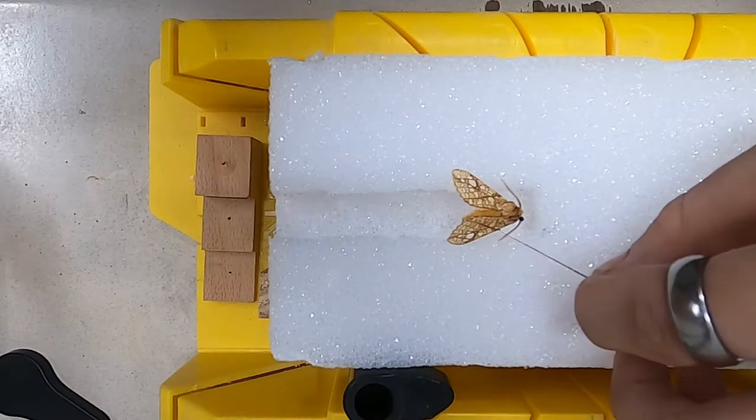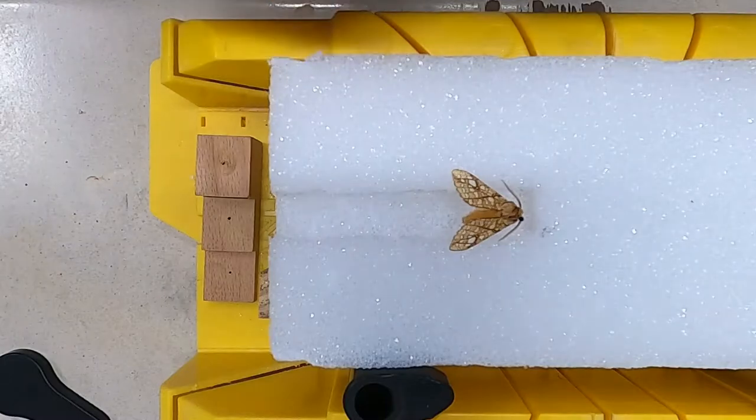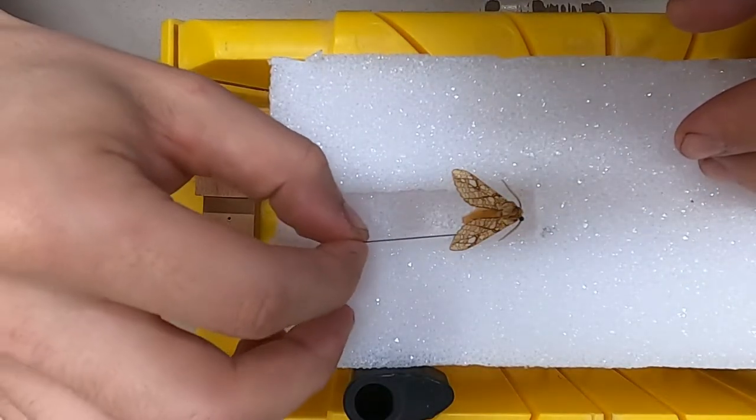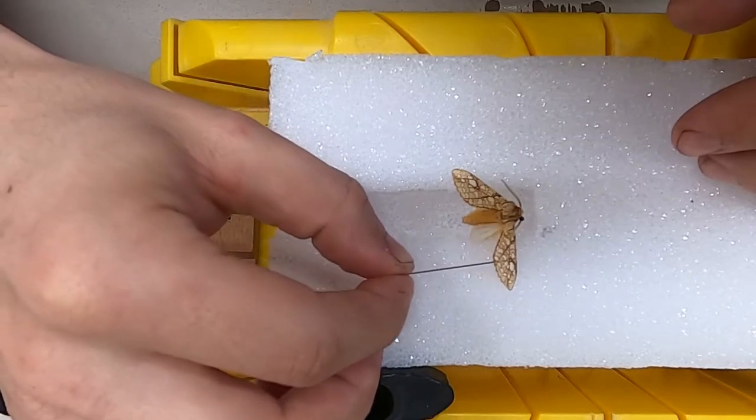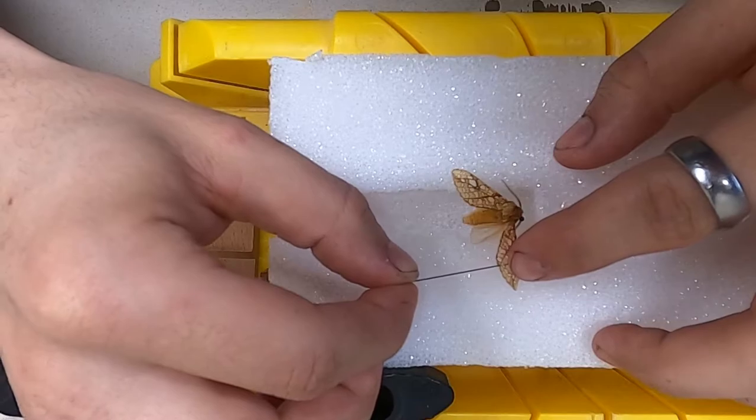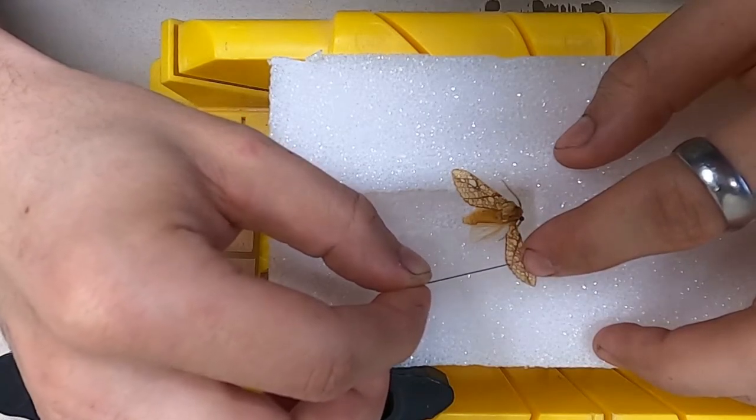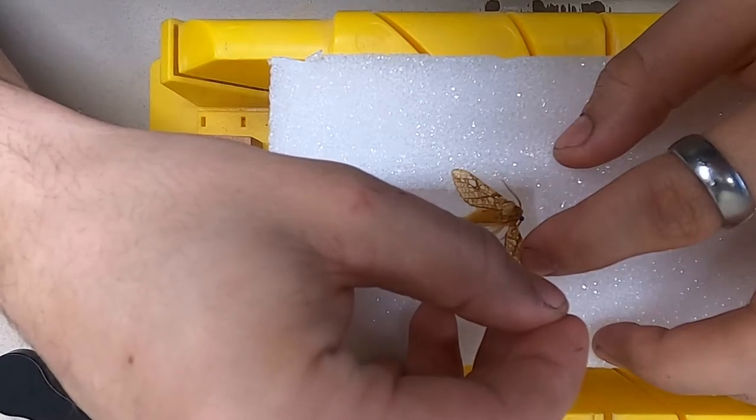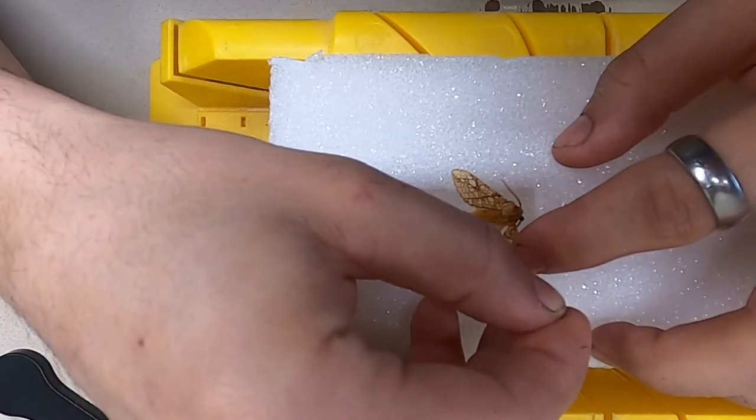Moths have a main vein that runs along the front edge of their wings. You need to very carefully stretch out their wing by tugging on that main vein, making sure that you're careful not to rip or tear or poke holes in the wings.